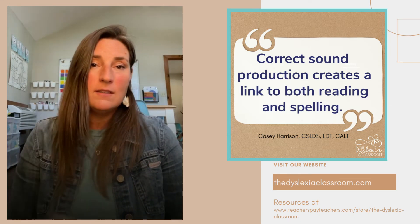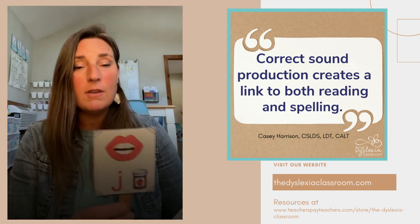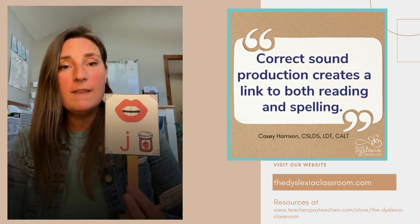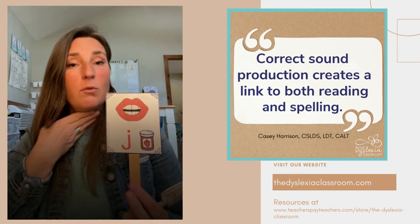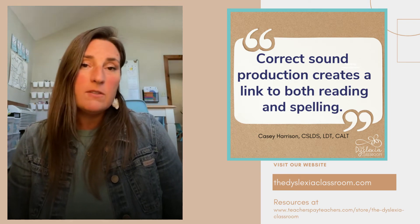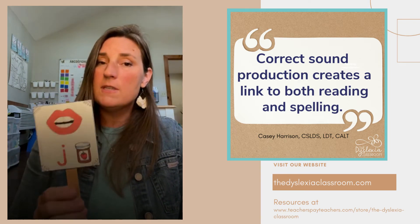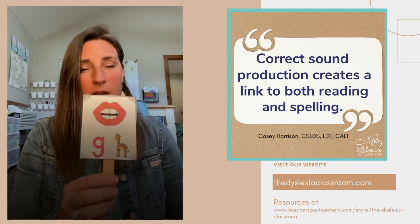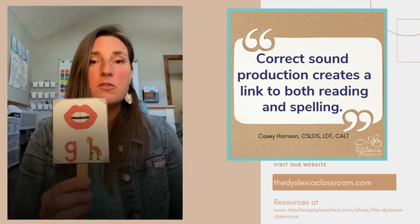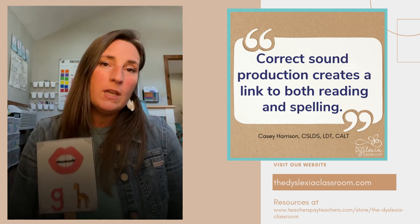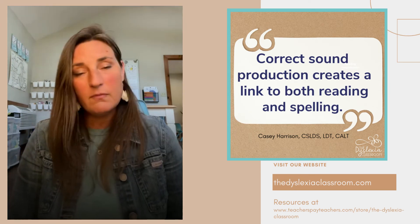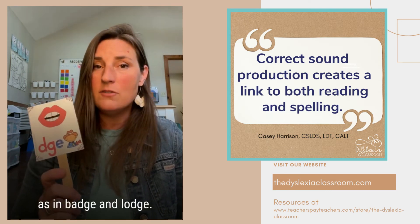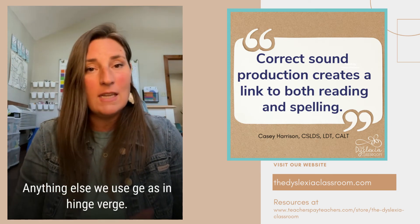The voiced pairing for ch is j. Have students look in the mirror again — they can make the ch sound and then turn their voice on: j. We want them to discover that the only difference is whether it's voiced or unvoiced. There are three different spellings for j: the initial position j as in jam, and j as in giraffe — this is the soft g concept where g before e, i, or y is pronounced j. In the final position of a word, we can use either the trigraph dge or ge. We use dge in a one-syllable base word after a short vowel sound, as in badge or lodge. Anything else, we use ge, as in hinge or verge.